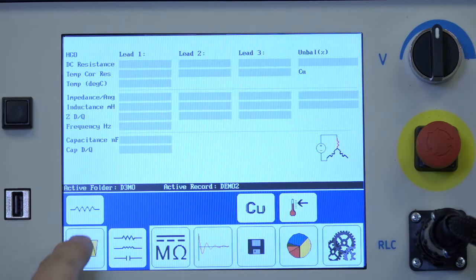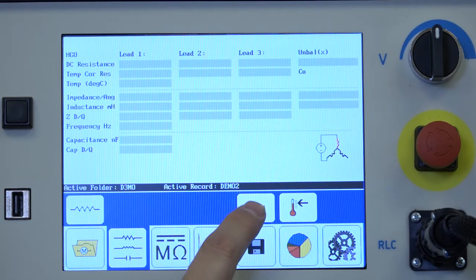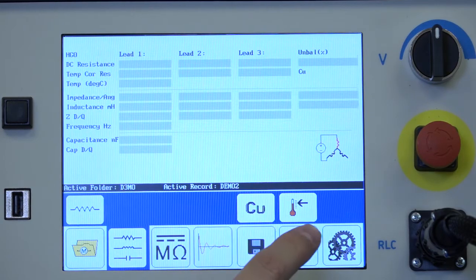Typically we'll start with resistance measurement. Before we start though we want to make sure that the copper or aluminum is selected properly. In this case my circuit is copper.